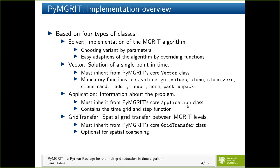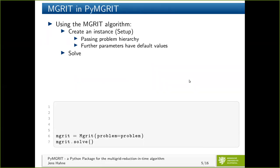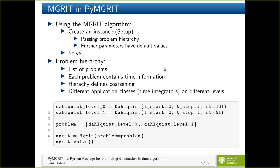Let's look in more detail at the solver — our MGRIT class. To use the MGRIT solver you need to create an instance and then call solve. The only required input is the problem hierarchy. There are further optional parameters, but everything else has default values. A problem hierarchy is nothing more than a list of application problems — for example, a fine level problem with 101 time points and a coarse level problem with 51 time points, put together in a list and passed to the solver.